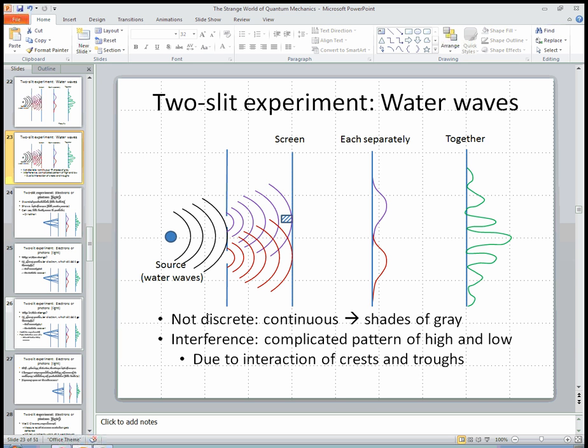So the graph, this continuous graph of intensity, has a very much more interesting structure because of the oscillating nature of the waves. So to sum up, it's not discrete. It's continuous. There are genuine shades of gray in terms of waves. But we get interference effects. We get a complicated pattern of high and low to the interaction of the crests and the troughs.